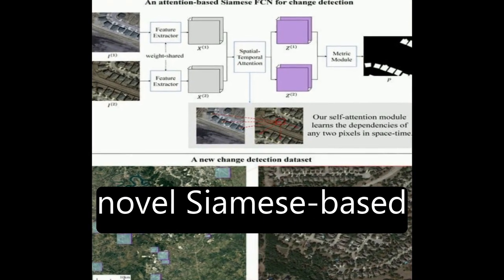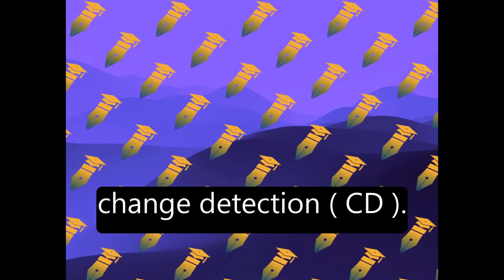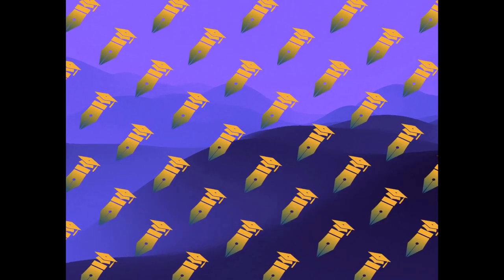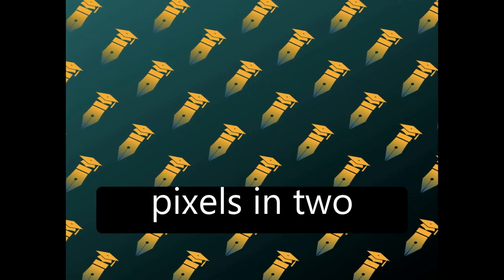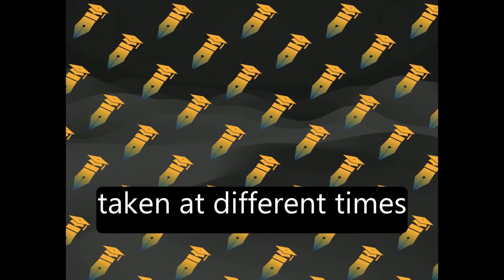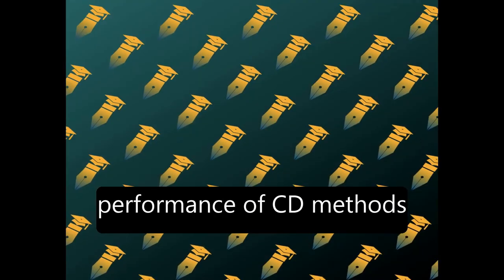The paper proposes a novel Siamese-based spatial temporal attention neural network for remote sensing image change detection (CD). The proposed method models the spatial temporal relationships between pixels in two co-registered images taken at different times, which improves the performance of CD methods.